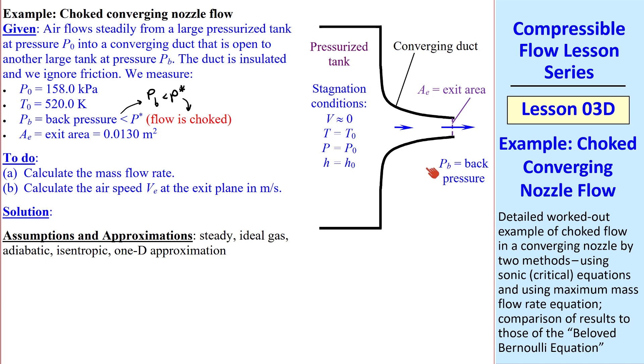This backpressure can range from 0, a perfect vacuum, all the way to P star, and the flow will not change, since the flow is choked as we've discussed previously. We'll calculate the mass flow rate and the airspeed VE, which I'll label here at the exit plane. I listed the assumptions and approximations which are typical of these flows.